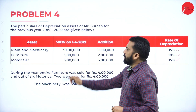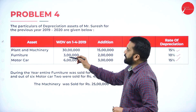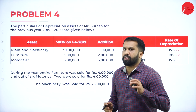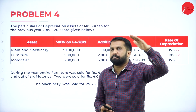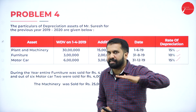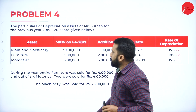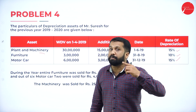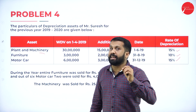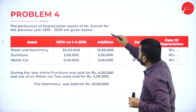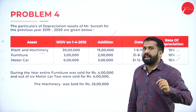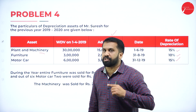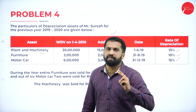We will go one by one — first plant and machinery, then furniture, and finally motor car. The procedure is: opening WDV plus purchases minus sales. Remember, whenever plant and machinery is involved, we have additional depreciation. Anything newly purchased requires extra depreciation of 20 percent.